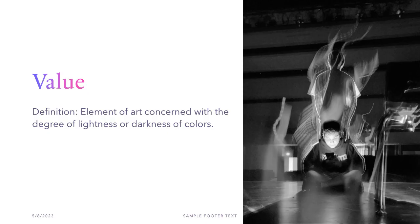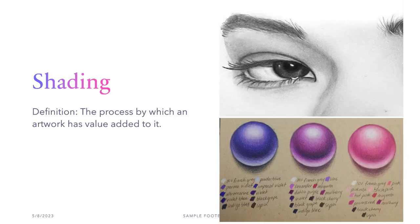Value is the element of art concerned with the degree of lightness or darkness of colors. You can have value in black and white as well as with actual colors. Shading is the process by which an artwork has value added to it — you are literally drawing where shadows or light areas are.